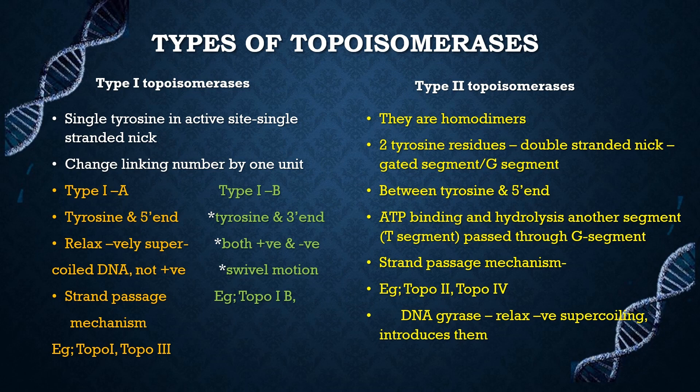There are two types of topoisomerases: Type 1 and Type 2. In Type 1, topoisomerase 1, topoisomerase 3, and every odd-numbered topoisomerases are included. In Type 2, every even-numbered topoisomerases such as topoisomerase 2 and 4 are included. Type 1 topoisomerases contain a single tyrosine in the active site and create single-stranded nicks, changing the linking number by one unit. They have two subtypes: Type 1a and Type 1b.